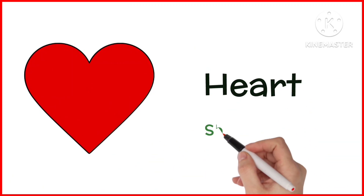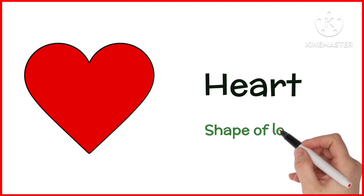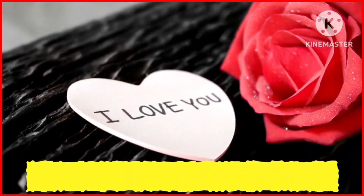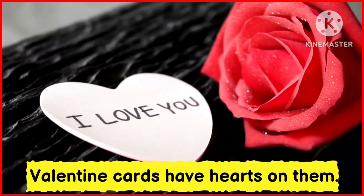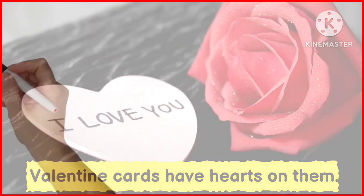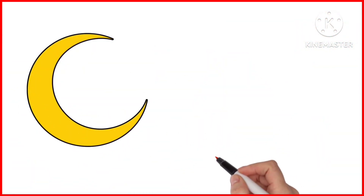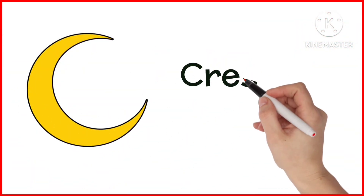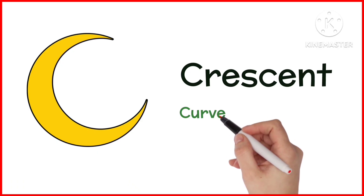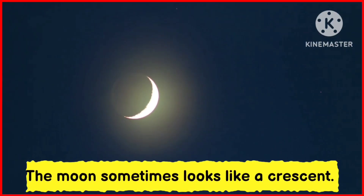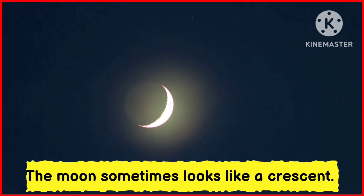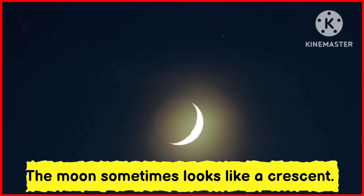Heart. Heart is a shape of love. Valentine cards have hearts on them. Crescent. Crescent shape is curved like a moon. The moon sometimes looks like a crescent.